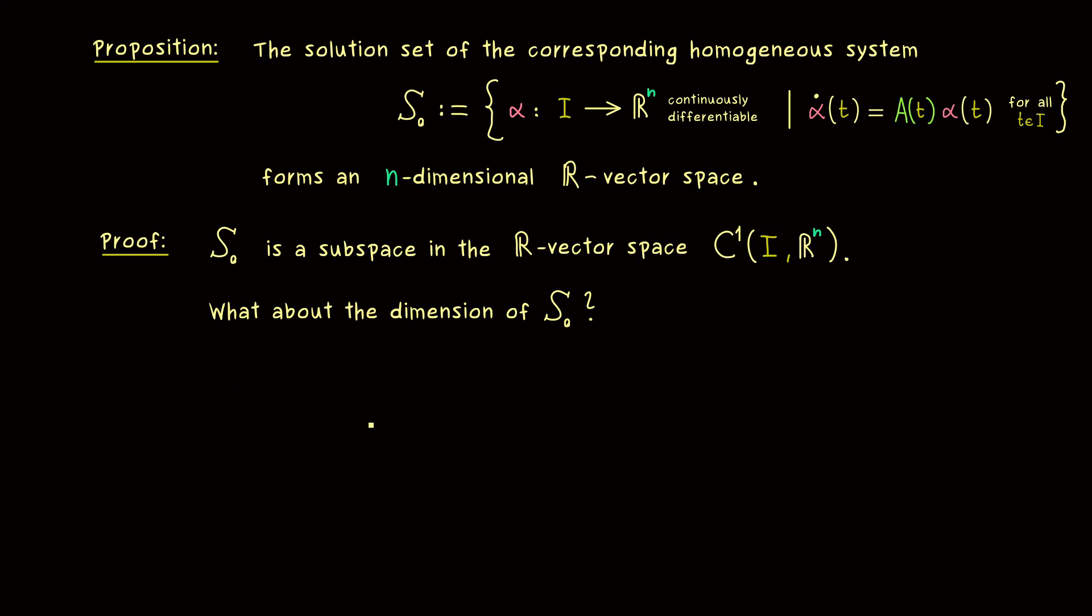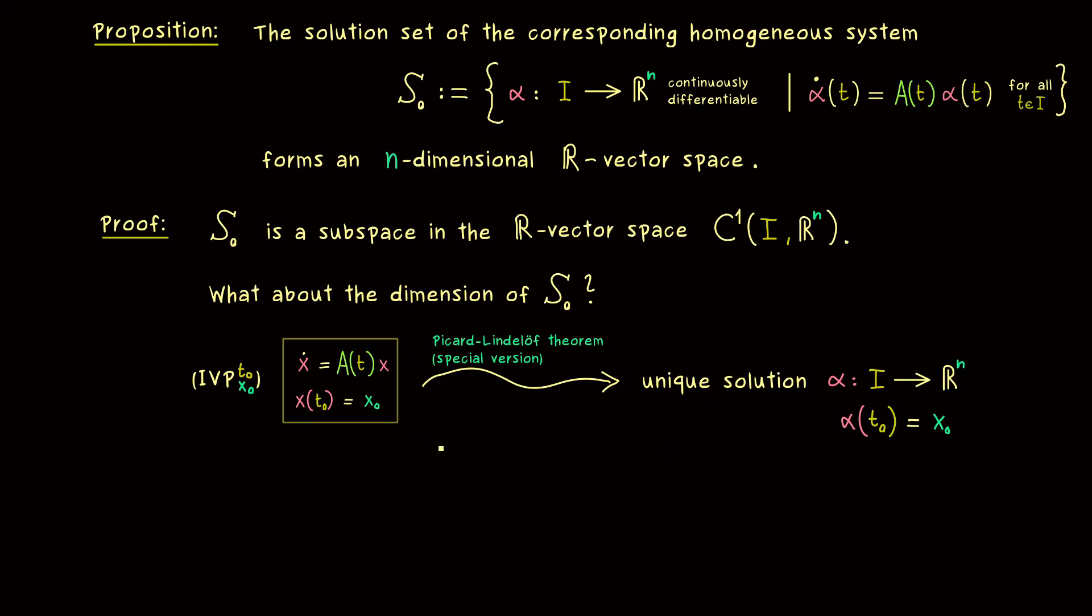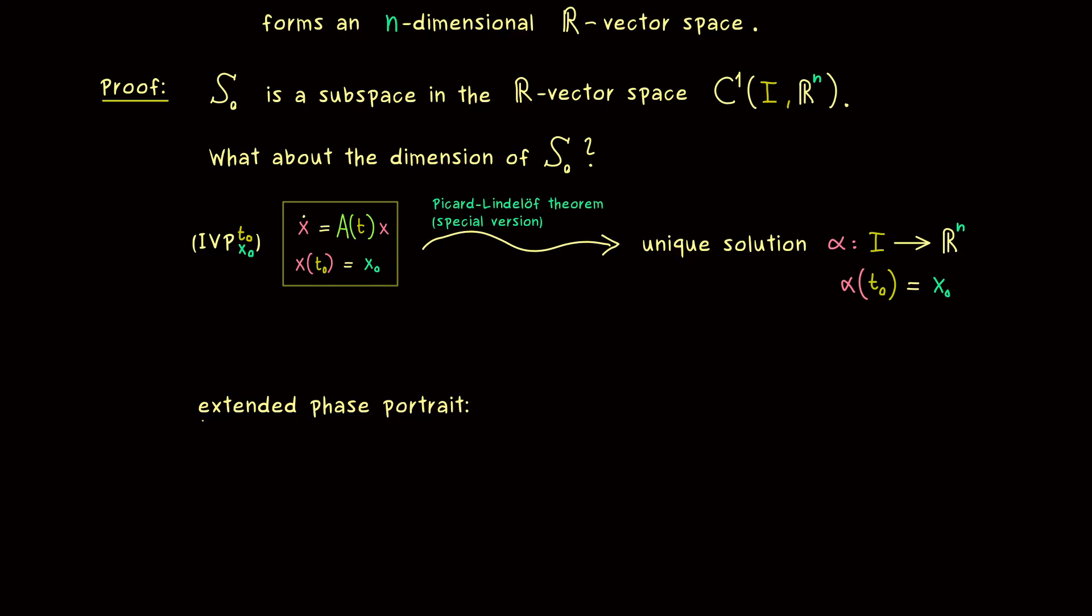Therefore, we need a good idea to show the dimension of S_0. And the good thing is, that at this point in the course, we already have a lot of theory about ODEs. So for example, we have the Picard-Lindelöf theorem, which tells us that the initial value problem here has a unique solution. And in our case, the w here is given by the homogeneous system. So we only have A(t) times x there. But still, what we get by Picard-Lindelöf is a unique solution. And indeed we know it's defined on the whole interval I. And moreover we have that alpha(t_0) is x_0.